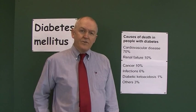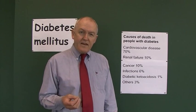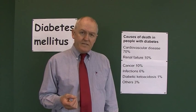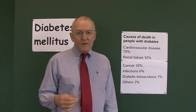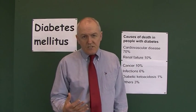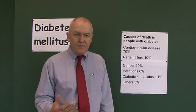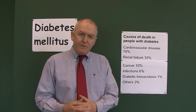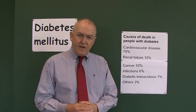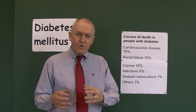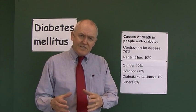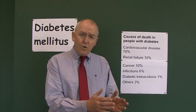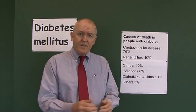Let's think now about the causes of death in people with diabetes. What is it these patients die from? Well, in the old days, before insulin was available, people would die from ketoacidosis with type 1 diabetes. Death would be quite quick.